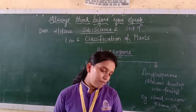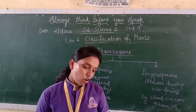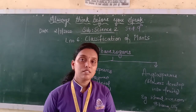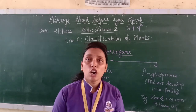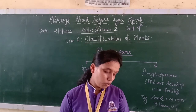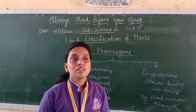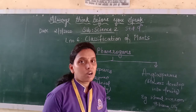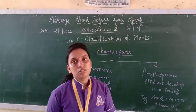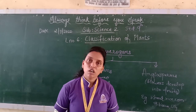Angiosperms are further divided based on seed structure. Plants whose seeds can be divided into two equal halves are called dicotyledonous plants. Those whose seeds cannot be divided into two equal parts are called monocotyledonous plants.